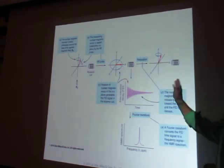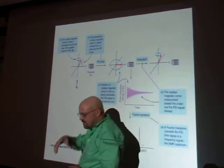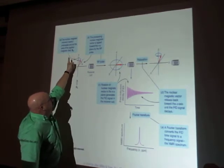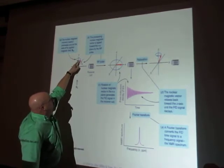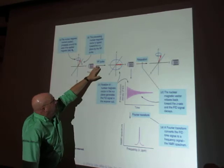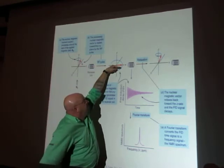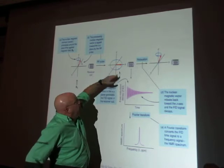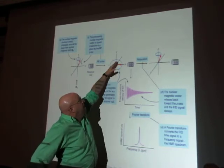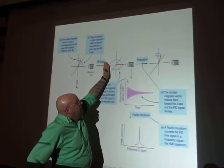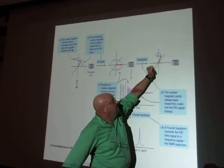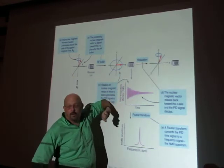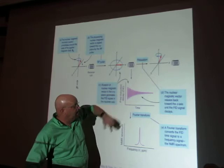The spin was precessing around the Z axis, and we hit it with a radio frequency pulse that flips the spin over to the XY plane. Now it's precessing around the XY plane. Over time it will relax back to the Z axis, and as it does it gives off that energy — that's what our detector picks up.